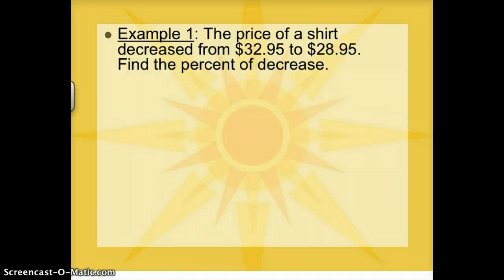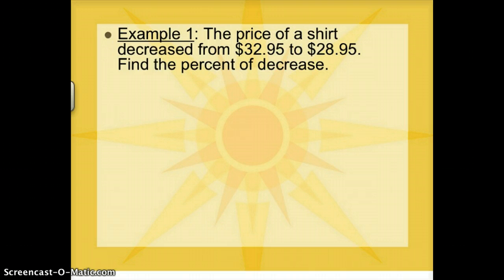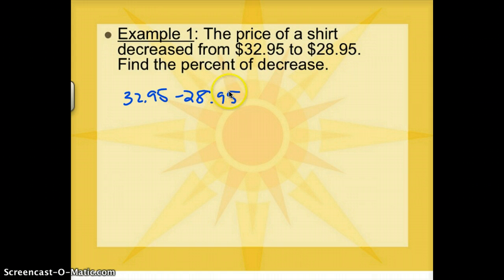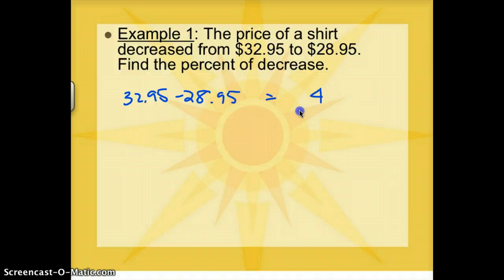The price of a shirt decreased from $32.95 to $28.95. Find the percent of decrease. Whenever you're trying to find out by what percent it decreased, the first thing we need to find is the difference. The difference between $32.95 and $28.95 is $4. That's my difference for the percent of change formula, and I need to divide it by my original. So it's going to be 4 divided by $32.95.